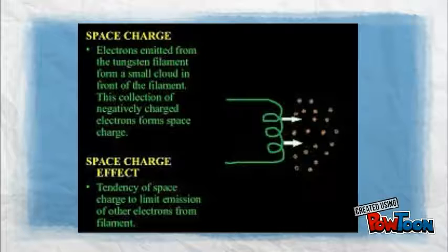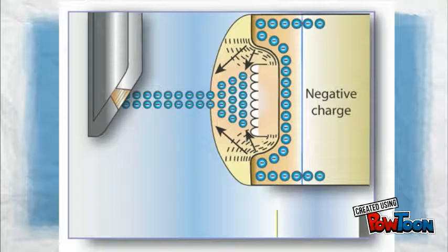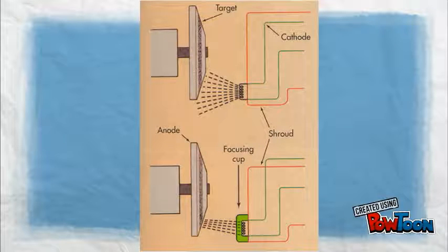This is where the focusing cup comes into play. The focusing cup, which is made of molybdenum, is a shallow depression in the cathode that houses the filament. The filament emits electrons, all of which have a negative charge. Since negative repels negative, the electrons that have been emitted have a tendency to diverge. As this is counterproductive in x-ray tubes, the focusing cup is a negatively charged housing that encourages the electrons to stay together. Essentially, the force that causes the electrons to repel each other is overpowered by the repulsive force of the focusing cup, and the electrons tend to converge rather than diverge.